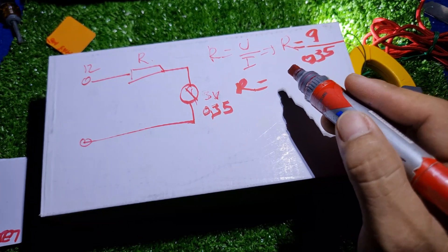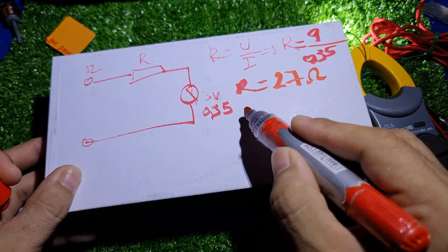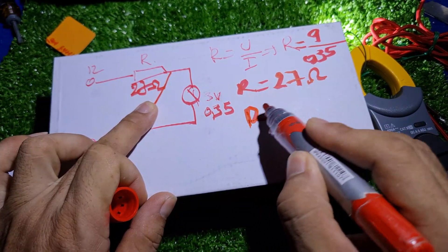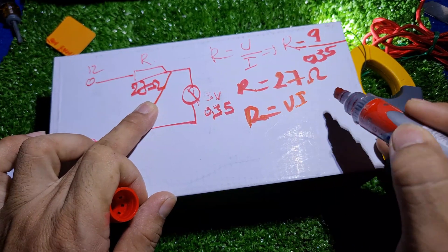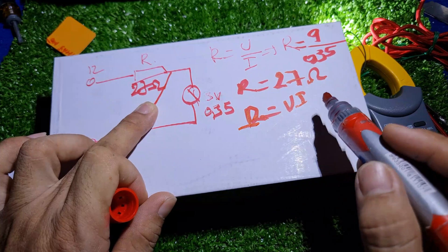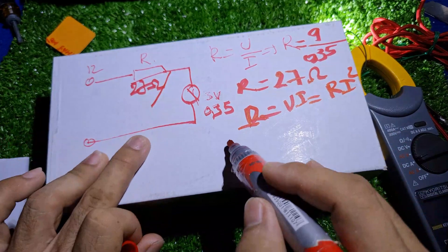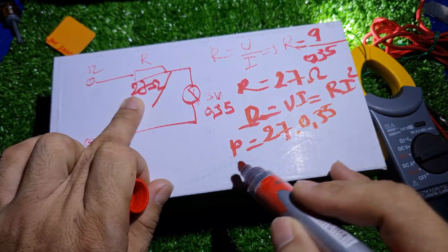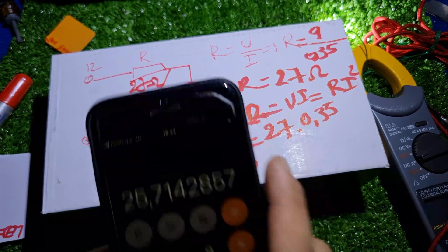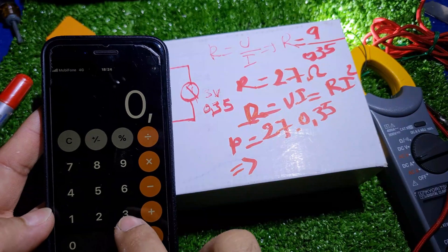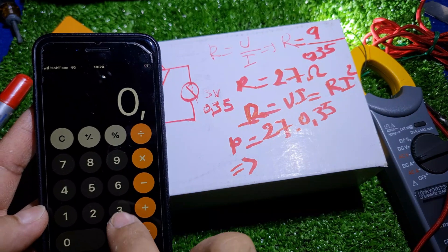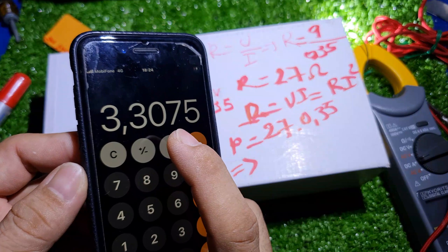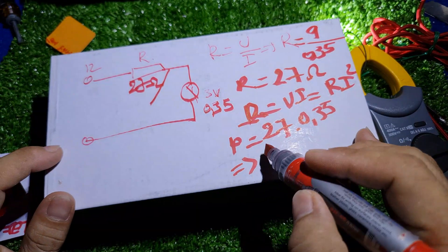In practice, a 26 ohm resistor isn't commonly available, so we use 27 ohm. Now we calculate the power rating for this 27 ohm resistor using the formula P = R × I². So P = 27 × 0.35² = 27 × 0.35 × 0.35 = 3.3 watts.